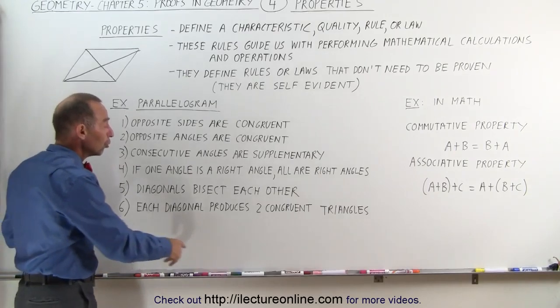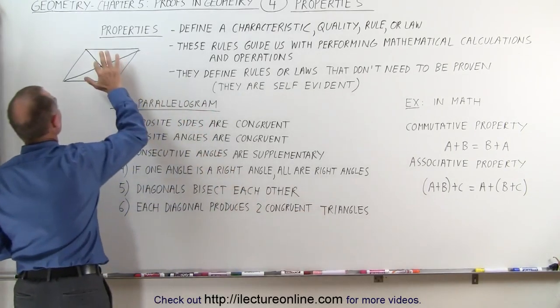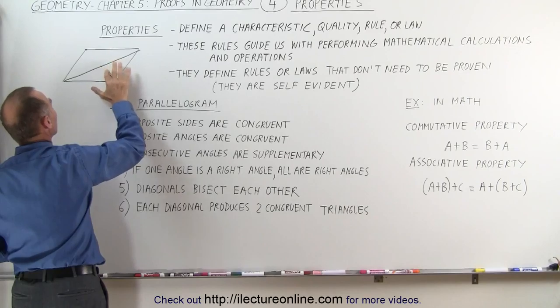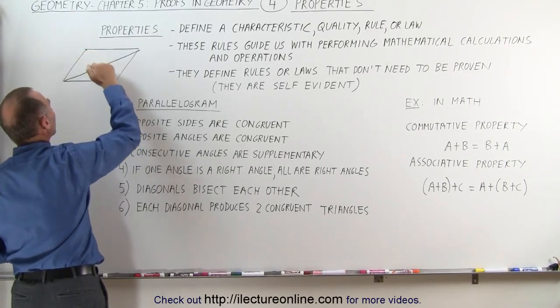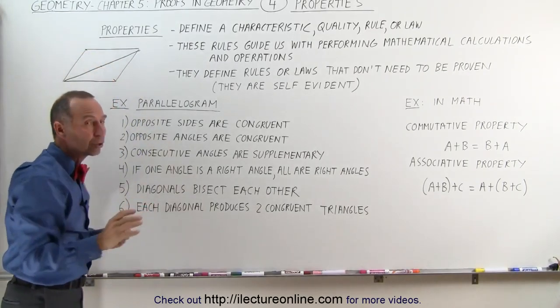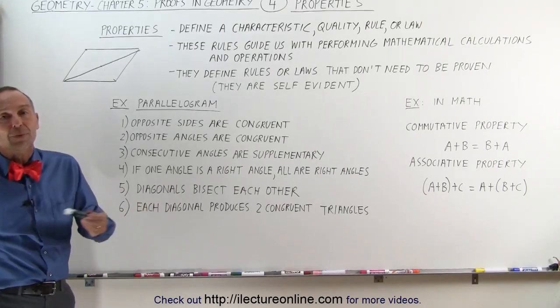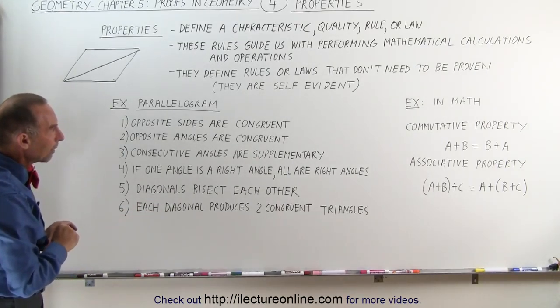And finally, each diagonal produces two congruent triangles. If we get rid of this one diagonal right here, we just look at the first one that we drew. Notice that these two triangles are congruent. That is simply a property of a parallelogram.